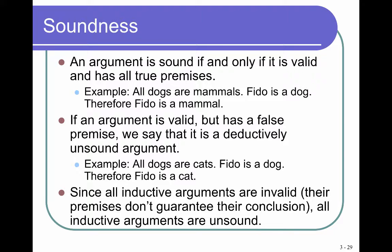Now you know if a deductive argument is valid or invalid. Let's add truth into the mix. An argument that is valid and has all true premises is what is known as a sound argument. If it is sound, then the conclusion must be true. For example: all dogs are mammals, Fido is a dog, therefore Fido is a mammal. We know the first premise is true, and as long as Fido is actually a dog, the second premise is also true. So if both premises are true and the structure is correct, we must accept the conclusion. On the other hand, if an argument is valid but has one or more false premises, it is called an unsound argument.